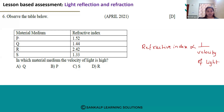If you look at the refractive indices, S has the least refractive index. So medium S will propagate light the fastest. Therefore, S is the correct answer.